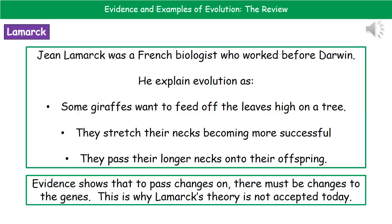Another scientist associated with evolution is Jean Lamarck, a French biologist who worked prior to Charles Darwin. Lamarck's theory was that if we think about giraffes — some giraffes want to feed off leaves high on a tree, so they stretch their necks, which makes them more successful, and when they breed they pass on their longer necks to their offspring. At the time, no one knew about DNA and genes. But today we can look at Lamarck's theory and understand, with scientific evidence, why that doesn't happen — because even if you stretch your neck in your lifetime, that's not going to change your genes, so it can't be passed on. Only changes that happen to genes are passed on to offspring.